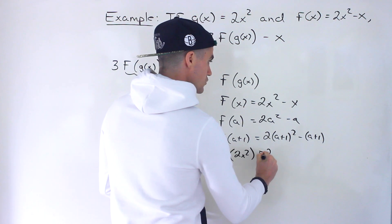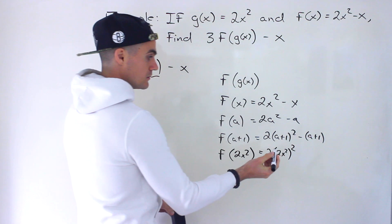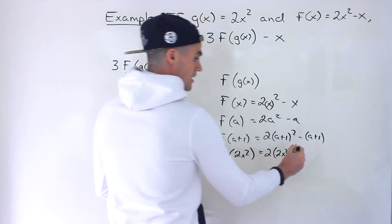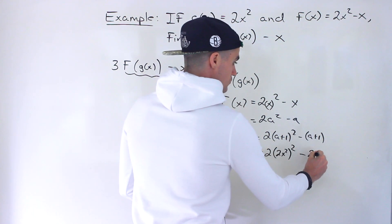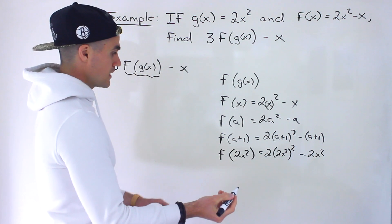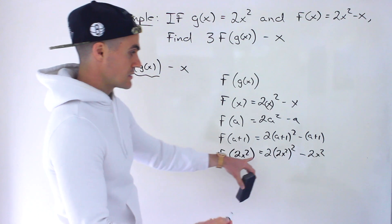So we'd end up with 2 times (2x²), and that's going to be squared. We plugged in 2x squared for this x, minus x, which is just 2x squared.